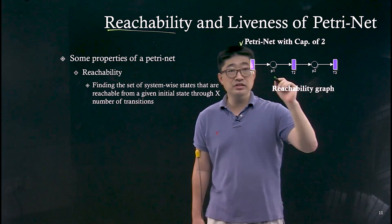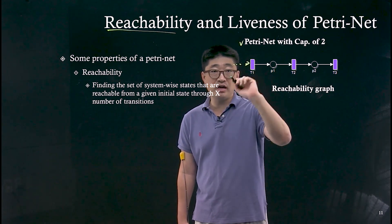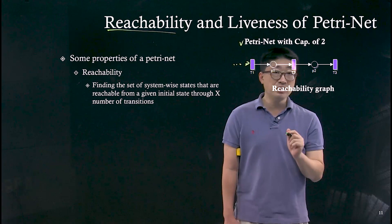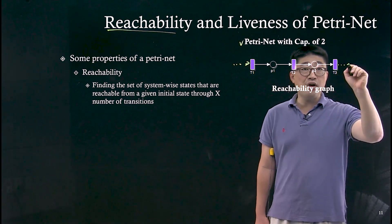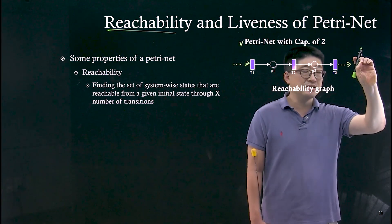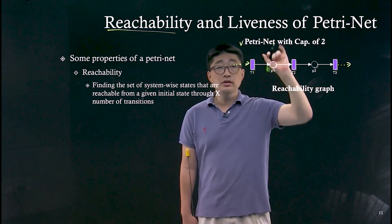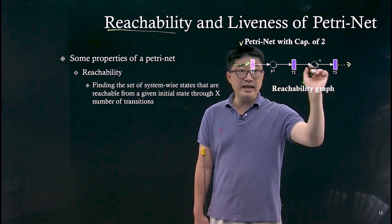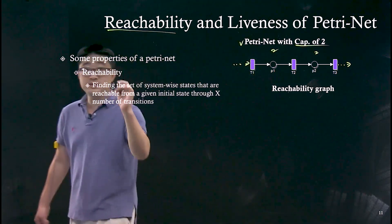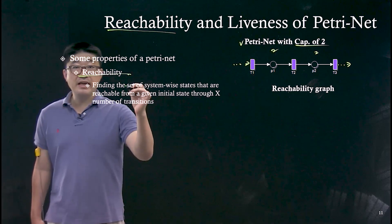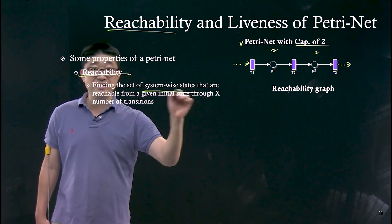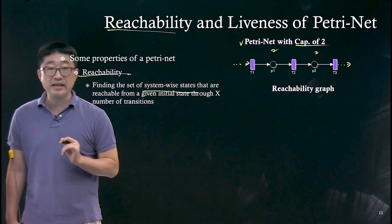Transition T2 is common, but T1 doesn't have an incoming arc, which means it does not have a required condition from incoming arcs. Similarly, T3 does not have an outgoing arc, meaning it is not restricted by outgoing arc place capacity. These places have a capacity of two at maximum. What we can do is reachability — finding the set of system-wide states reachable from a given initial state through some number of transitions.